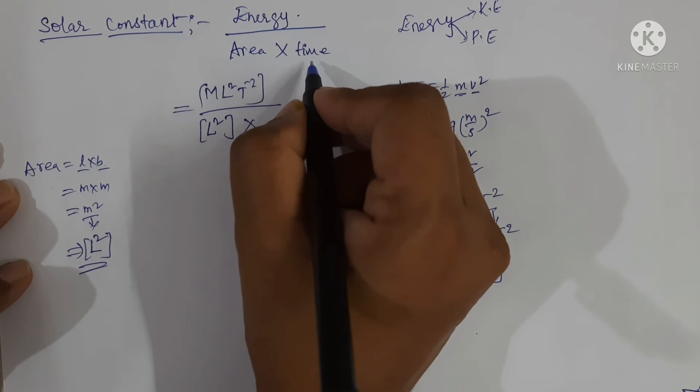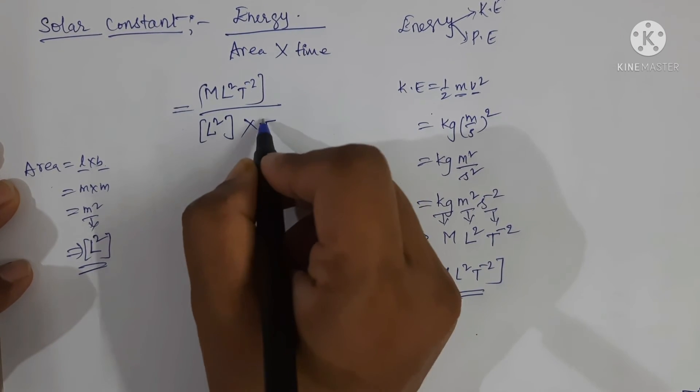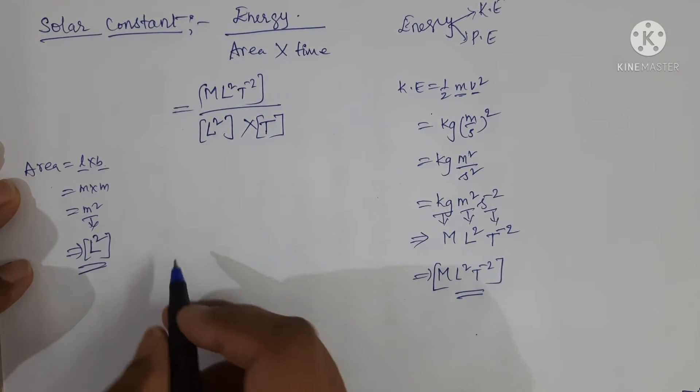And here it is time. SI unit of time is second, and second is expressed in terms of capital T. So this is the dimensional formula for time.